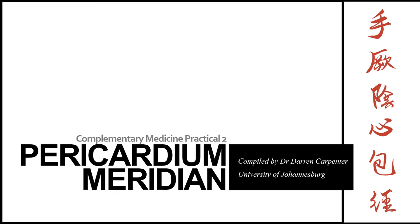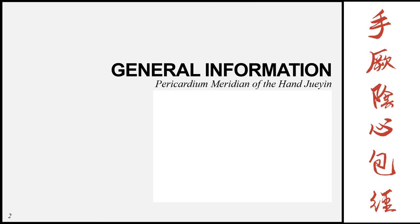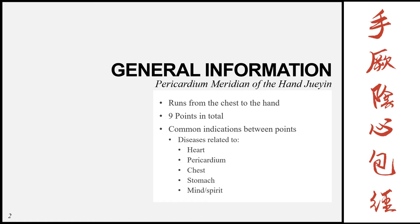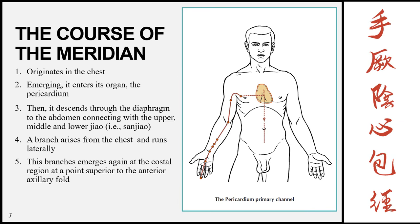Good day everyone. Today we will be looking at the pericardium meridian. The full name of this meridian is the pericardium meridian of the hand Juyin. Because it's a yin meridian of the hand, it runs from the chest to the hand and then to the fingers. There are 9 points in total on this meridian. The common indications between points include diseases related to the heart, pericardium, chest, stomach, and the mind and spirit — referring to TCM organs.